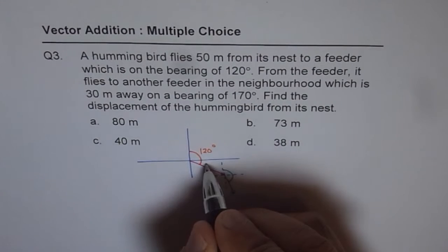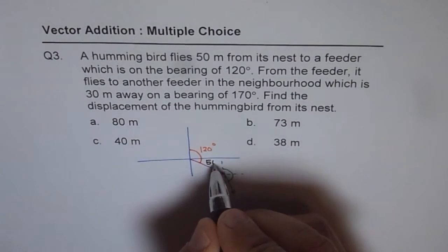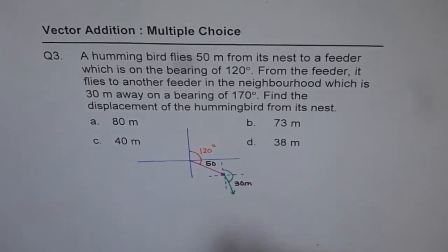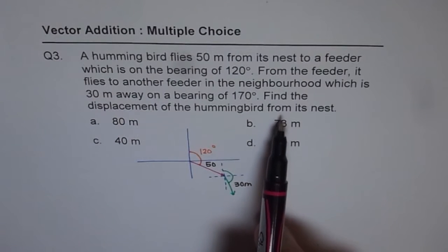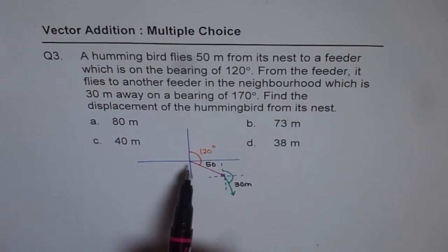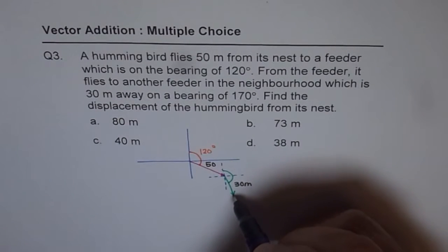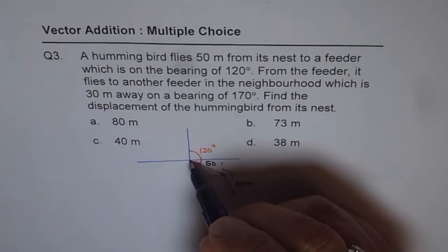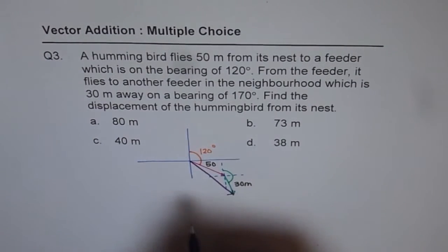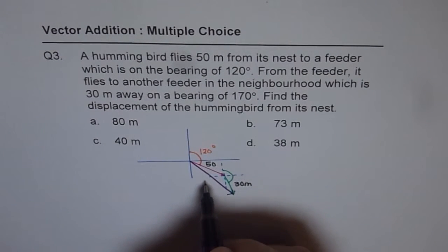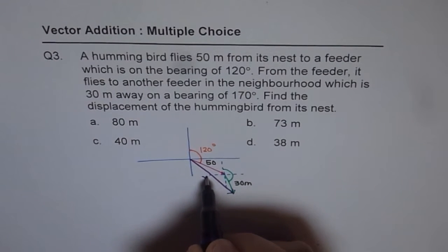So, we have two sides of a triangle. One is 50 meters, the other one is 30 meters. The result then is the displacement. We need to find the displacement of the hummingbird from its nest. We have assumed that the nest is at the origin. From the nest, let's connect the final point. That length is the displacement and let me call this as R for the time being.